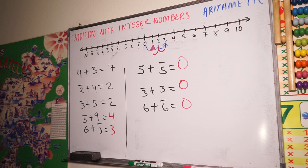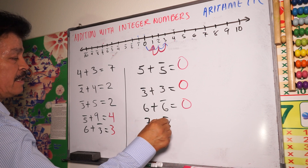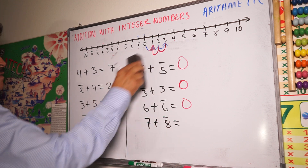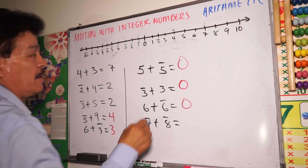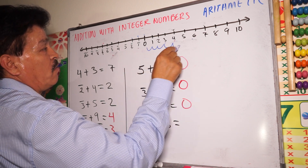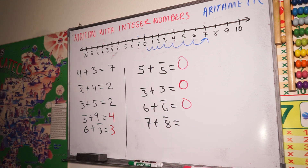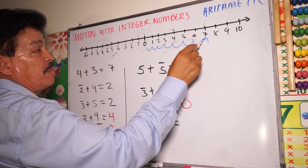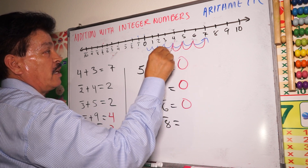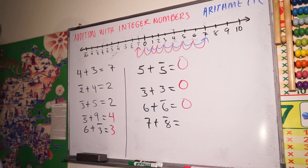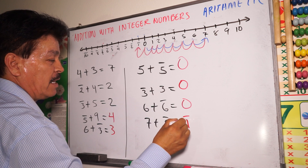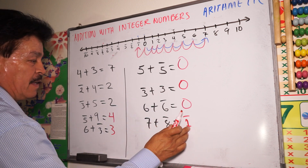I would like to write another problem. For example, seven plus minus eight. Let me use the number line. Go to seven — one, two, three, four, five, six, seven. Then plus negative eight — one, two, three, four, five, six, seven, eight. It equals negative one, right? Negative one.